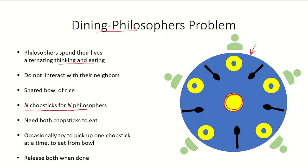If there are five philosophers then there are five chopsticks. Each philosopher needs both chopsticks to eat — specifically the adjacent chopsticks on either side. Occasionally, whenever a philosopher wants to eat, he or she will try to pick up one chopstick at a time and then eat from the bowl. Once finished eating, he will release both chopsticks.